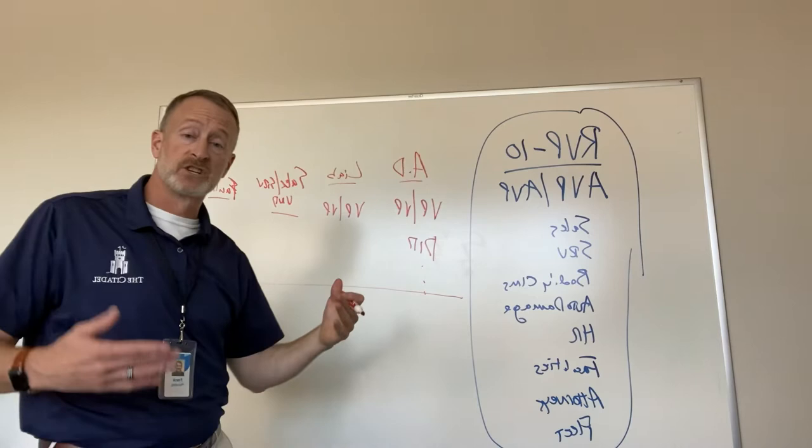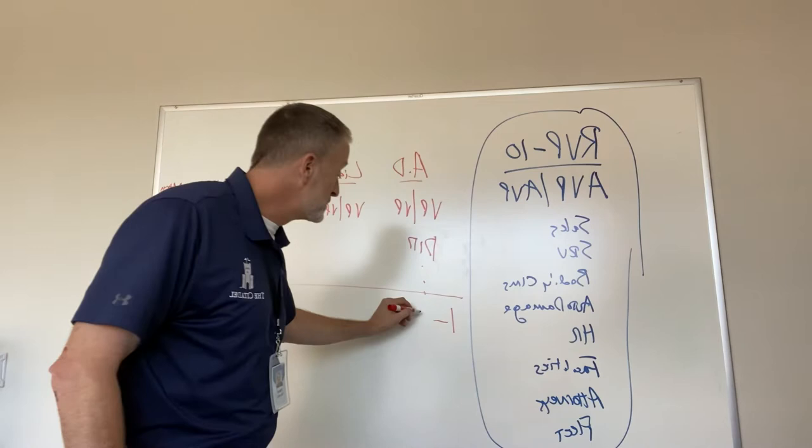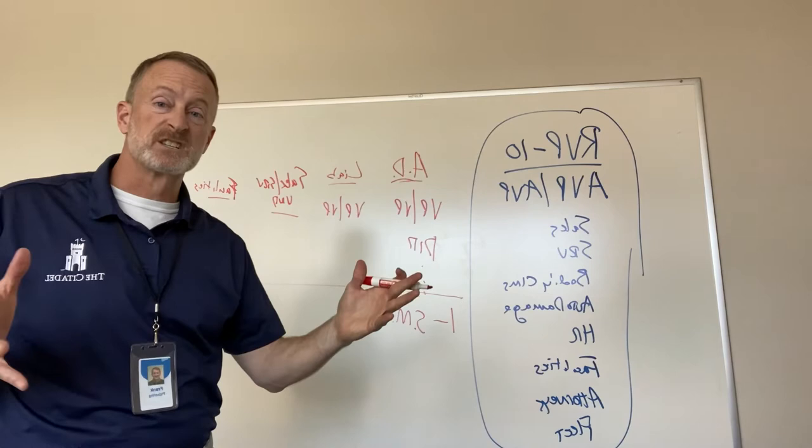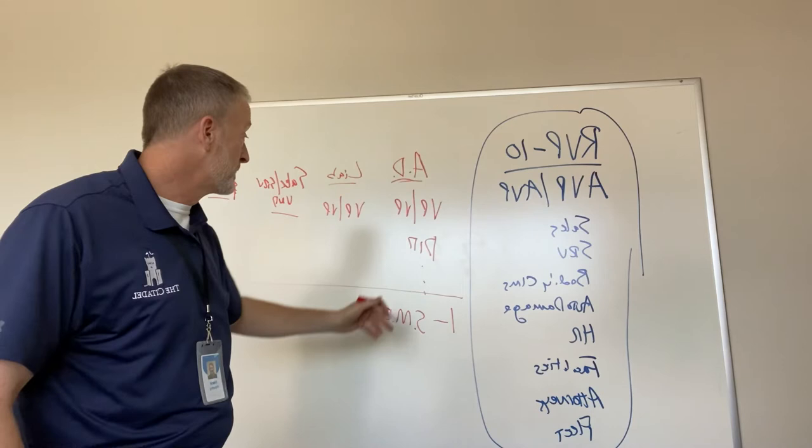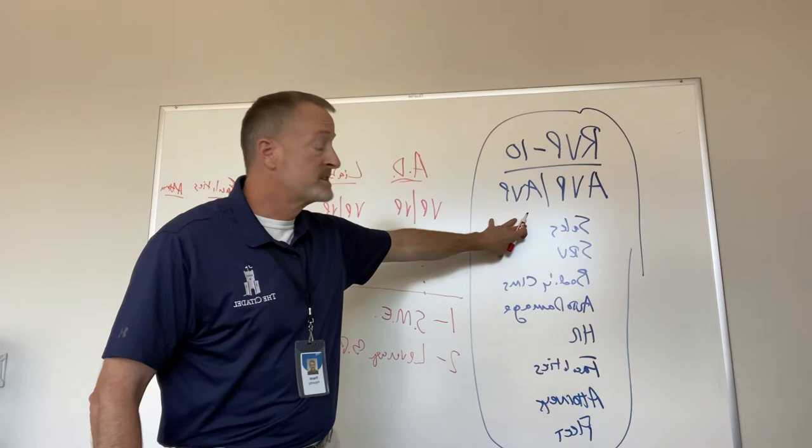So what we're doing is we're moving to business units. One of the strengths of doing this is you have subject matter experts. So the person that's going to run auto damage has grown up in auto damage, has the most experience, and they will be able to bring their expertise to this department.